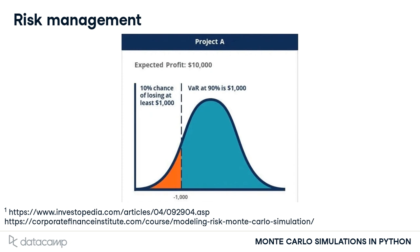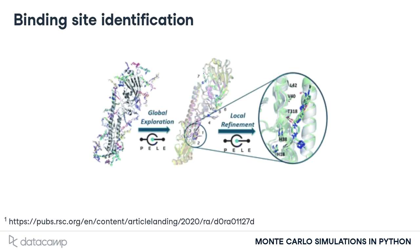Here, the most an investor expects to lose is $1,000 with 90% confidence. Monte Carlo simulations are also used in a variety of physical science applications, such as identifying protein binding sites.